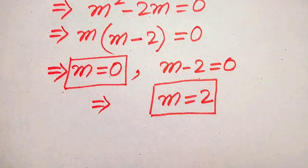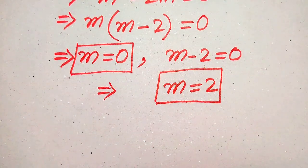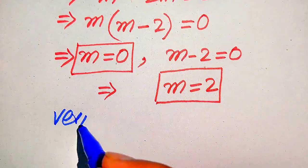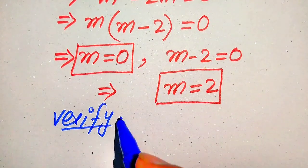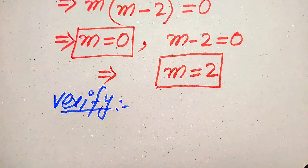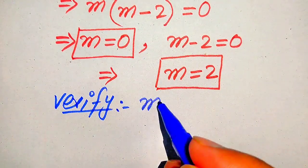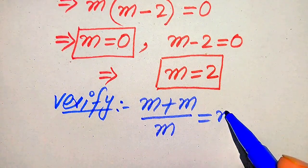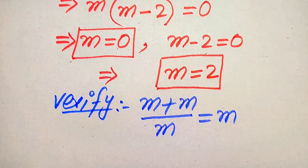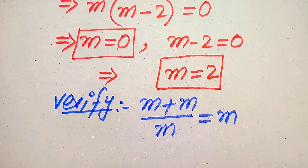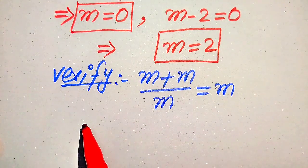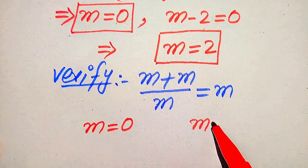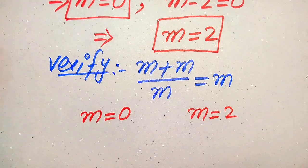From the first method we get these two roots. Now we need to verify them by checking whether they satisfy the original equation. We copy down the given equation: m plus m divided by m equals m. We will substitute both values — m equals 0 on one side and m equals 2 on the other.